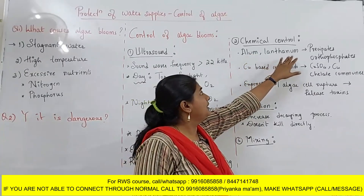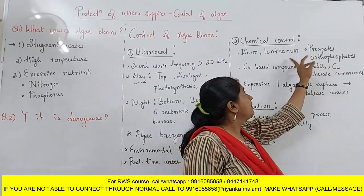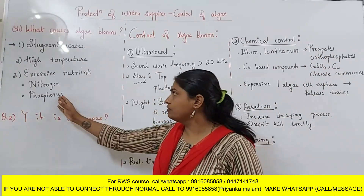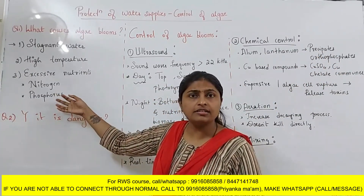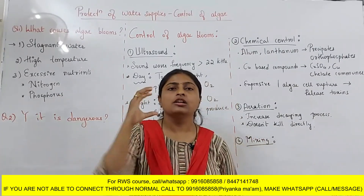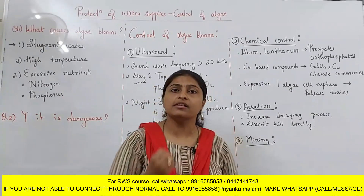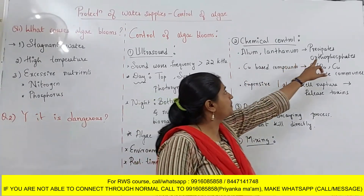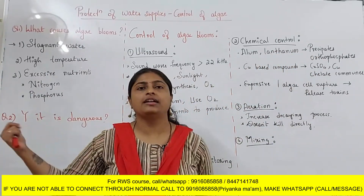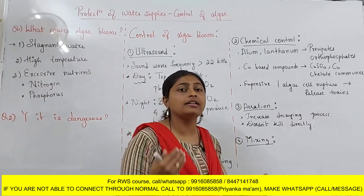Chemicals like alum and lanthanum can be used. What exactly happens is these chemicals precipitate orthophosphates — since phosphorus is one of the important nutrients for the growth of algae, precipitating it removes all the phosphorus. So when all the phosphorus is removed by adding certain chemicals, the algae will not have the nutrients and the growth of the algae will start reducing.